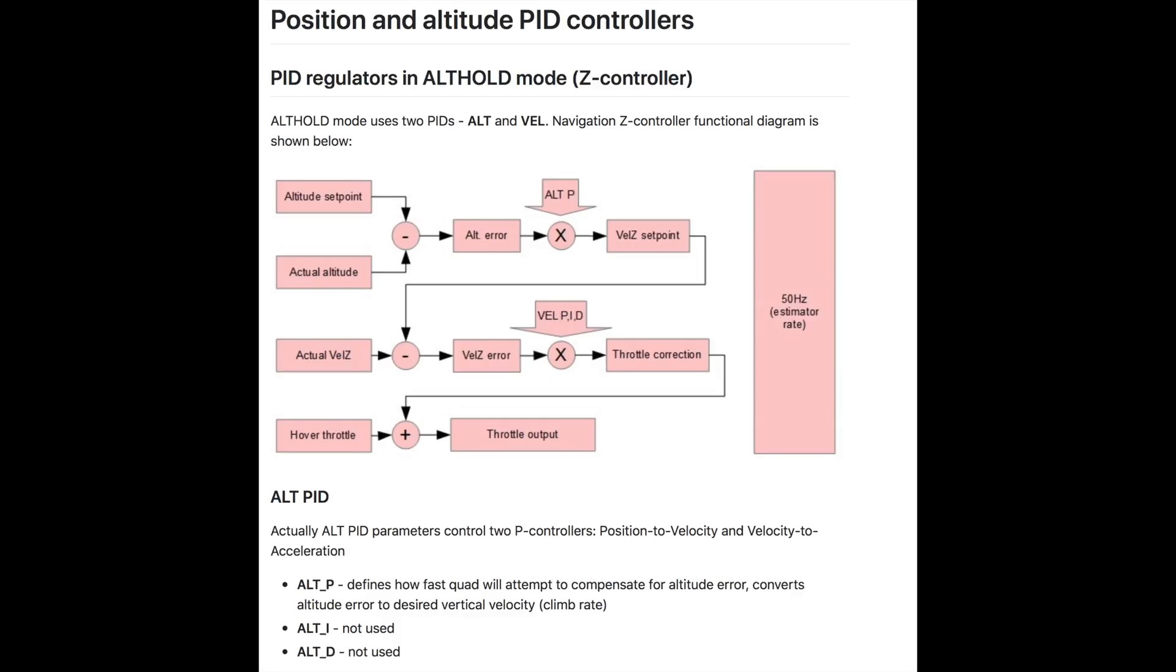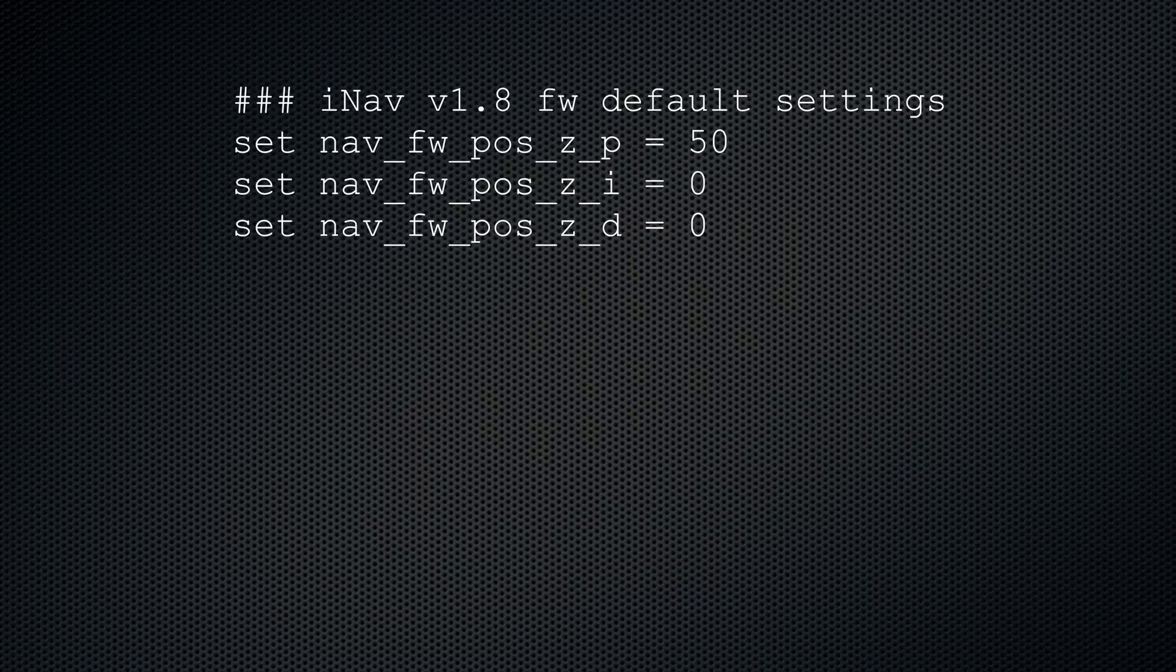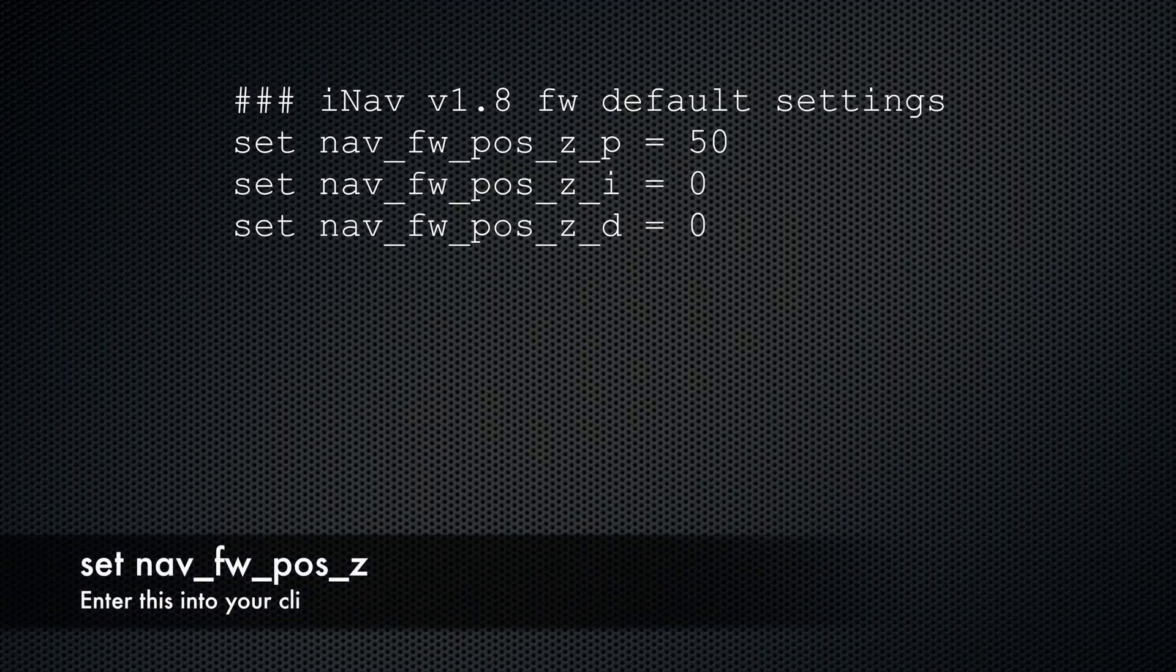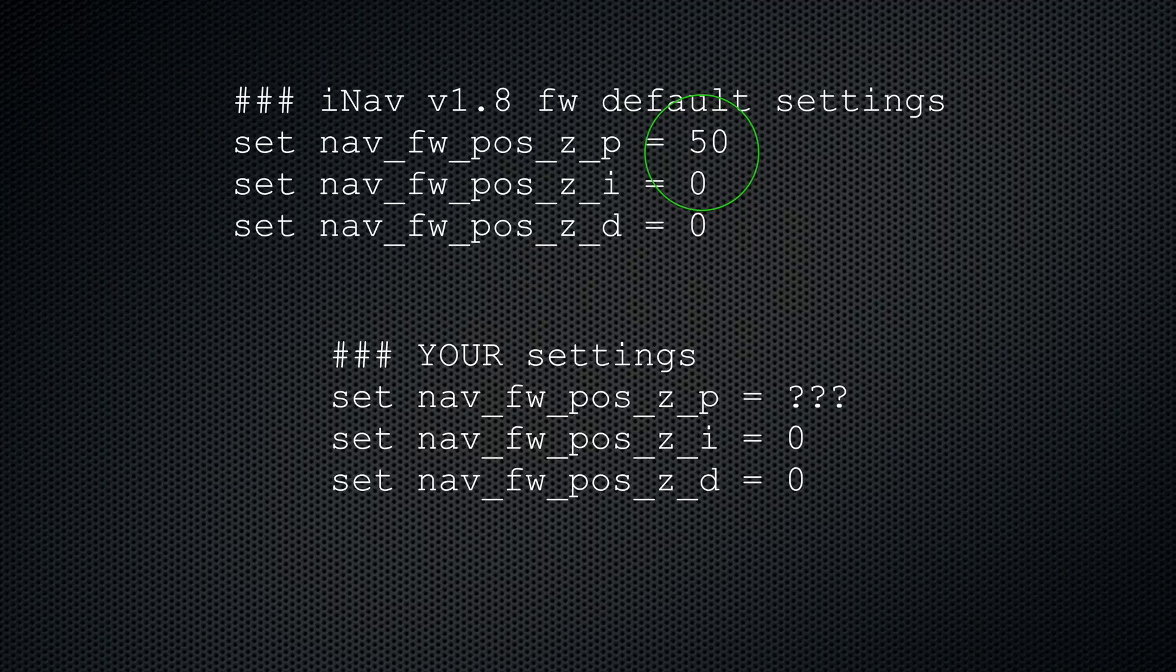This behavior is controlled by the altitude controller. If your fixed wing is waving up and down like a roller coaster, then you definitely have the wrong values. If you open up your CLI and enter this command, you'll probably find the P-value to be about 50. So if your settings differ from 50, readjust to 50 and get going from there.